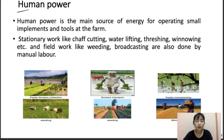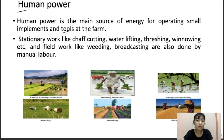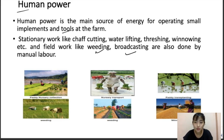Human power is the main source of energy for operating small implements and tools at the farm. It is one of the most primitive and most widely used methods in agriculture even today. Some work that can be done through human power includes chaff cutting, water lifting, threshing, weeding, and field work like broadcasting — a method of sowing.